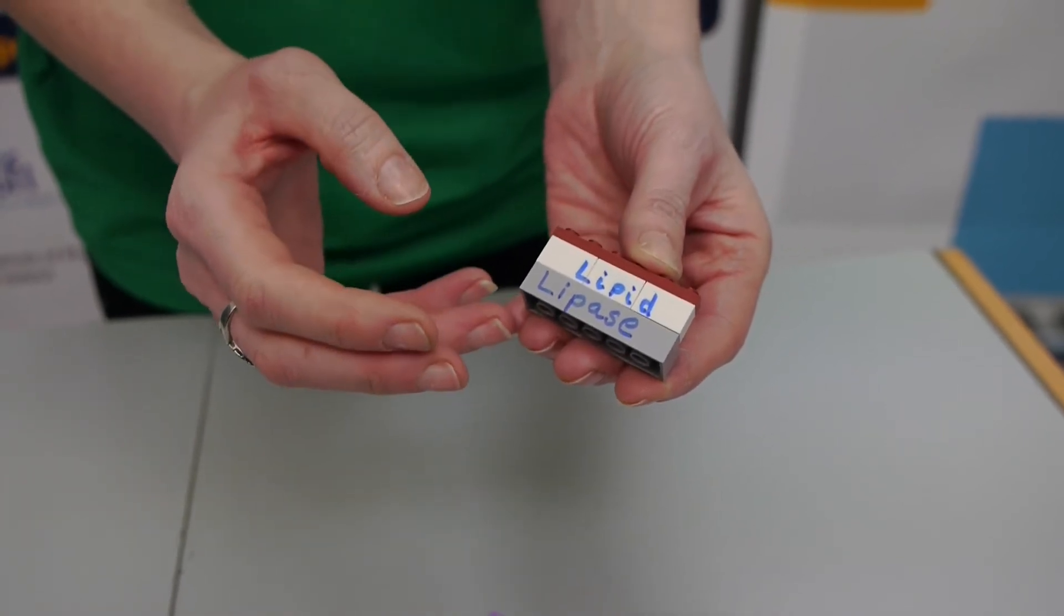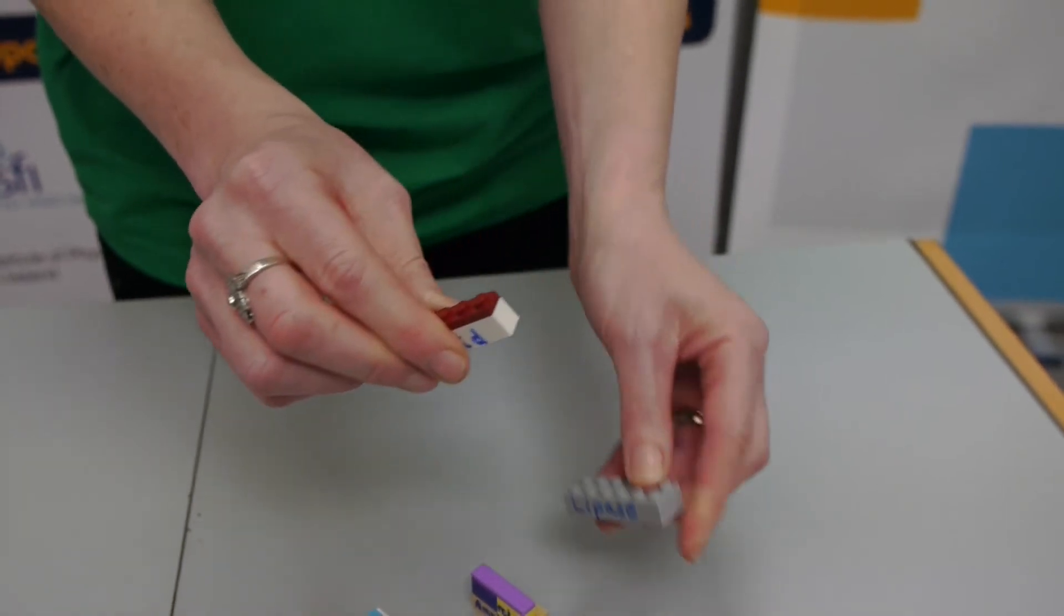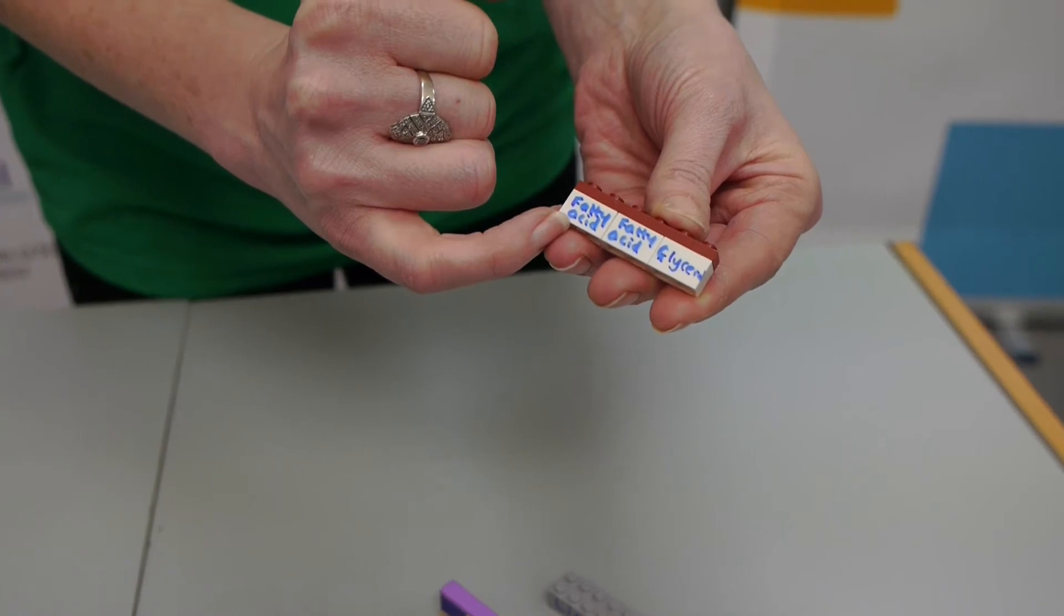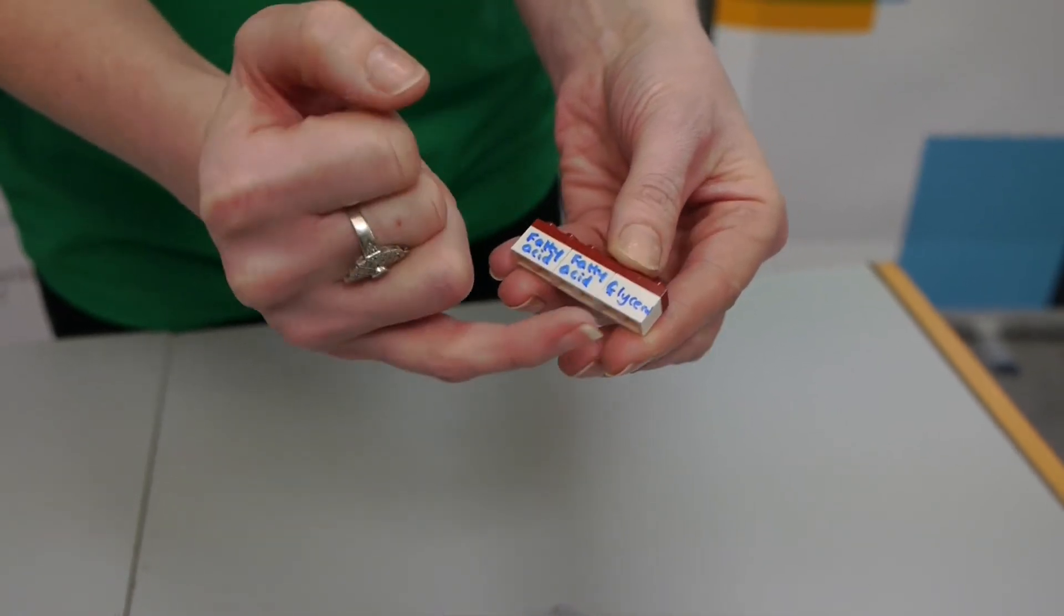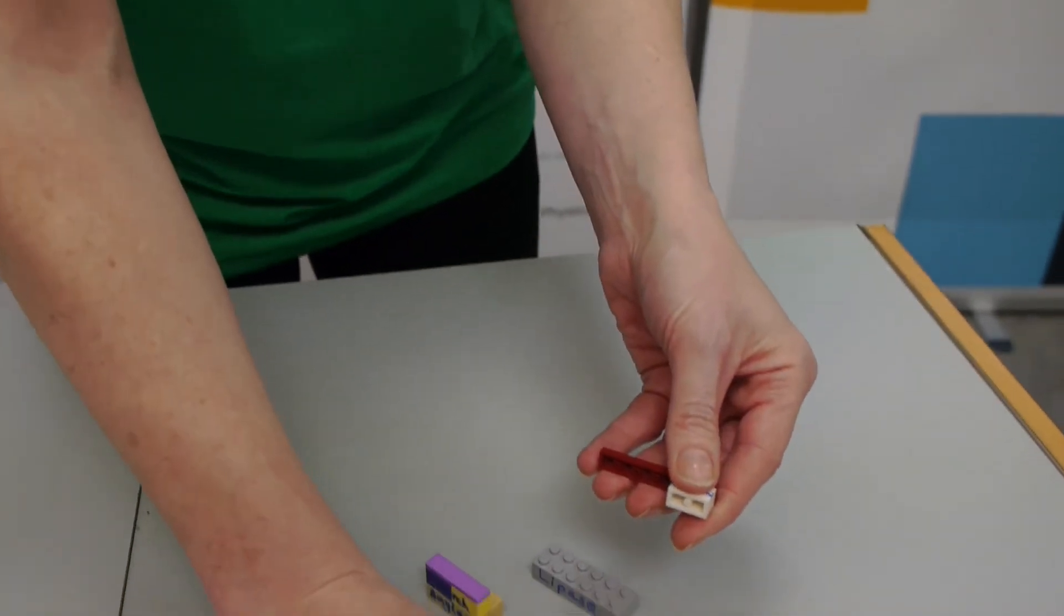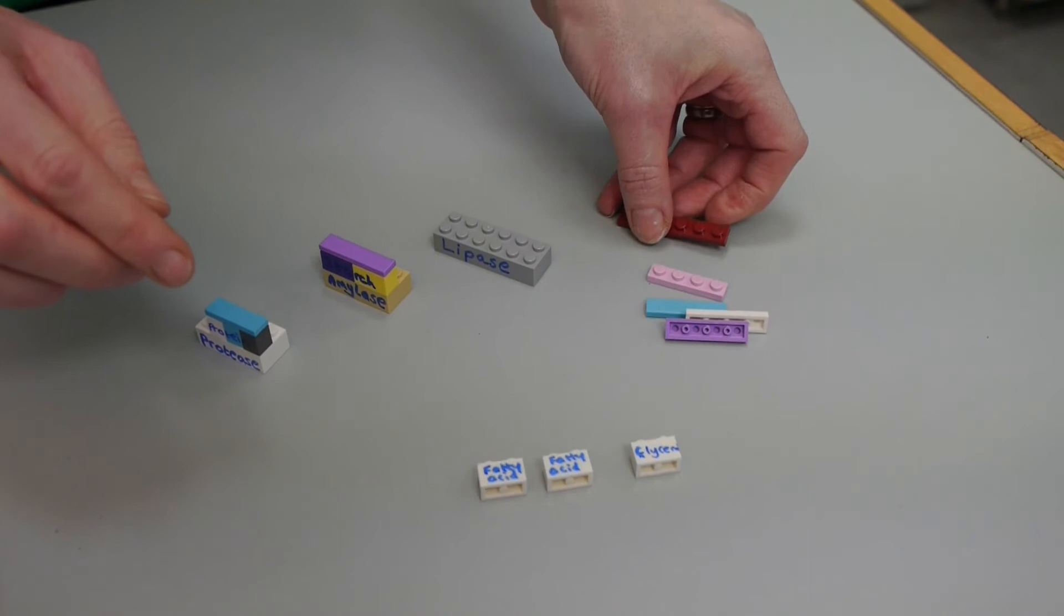Then we ask the students to make the products from these enzymes. So on the other side of the brick, the enzyme is going to break it up and I have written on this side fatty acids and glycerol. So by using the three separate bricks I can actually identify that my product will be two fatty acids and one glycerol.